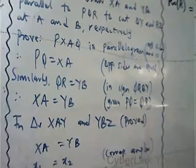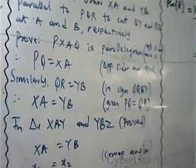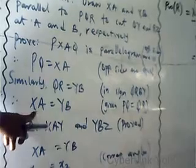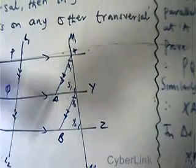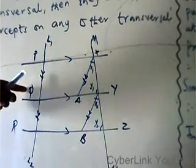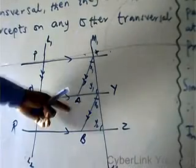So what we said is that PQ equals XA — that is opposite sides being equal for parallelograms. Similarly, QR equals YB in the other parallelogram. And also, XA equals YB, which comes from our given. XA equals YB because it is a parallelogram and PQ equals QR. So if PQ equals QR, then automatically XA equals YB will also be true.